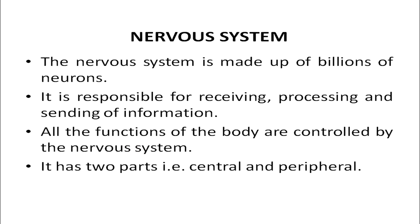First of all we should understand what is a nervous system. The nervous system is made up of billions of neurons. The neurons make a network of connections and it is responsible for receiving, processing and sending of information. All the functions of the body are controlled by the nervous system. It has two parts: the central nervous system and the peripheral nervous system.